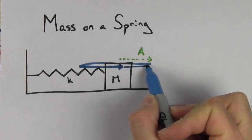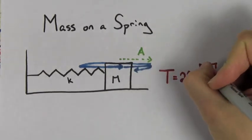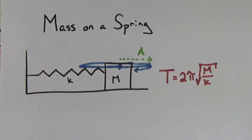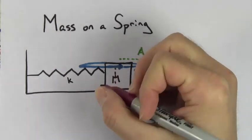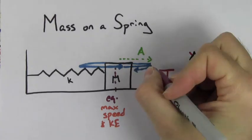The time it takes for a mass to complete one oscillation is 2π√(m/k). Notice that the period does not depend on the amplitude. Increasing the amplitude will make the speed larger at equilibrium, but it will not reduce the time required for a complete cycle.